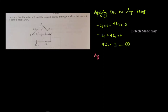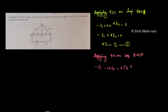In this loop, we apply KVL on loop BACB. We will apply: minus i1 minus 1.5i1 minus 2 into (i1 plus i2) plus 10 is equal to 0. That gives: minus i1 minus 1.5i1 minus 2i1 minus 2i2 plus 10 equals 0.